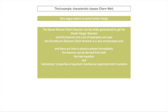I've put 'elementary' in quote marks because there's kind of nothing elementary about quantum mechanical supersymmetric systems. But if you know what one is, then you can derive the Atiyah-Singer theorem without much further knowledge. According to Wikipedia, the Gauss-Bonnet-Chern theorem itself is useful in general relativity when you look specifically at four-dimensional, or I guess three-plus-one, dimensional things.